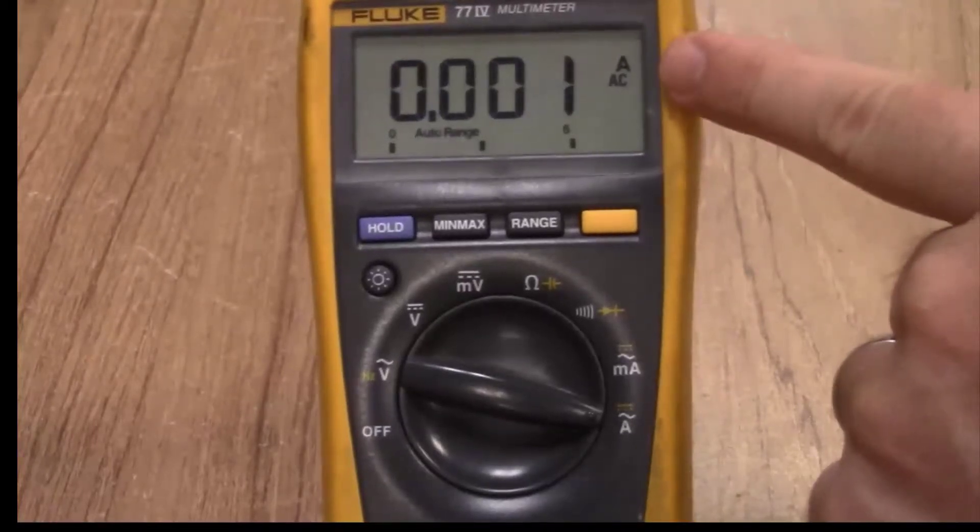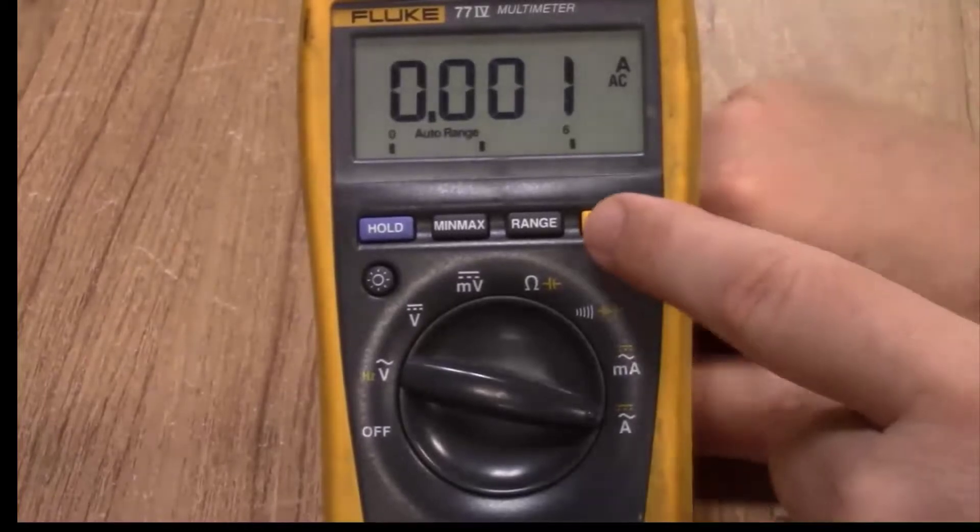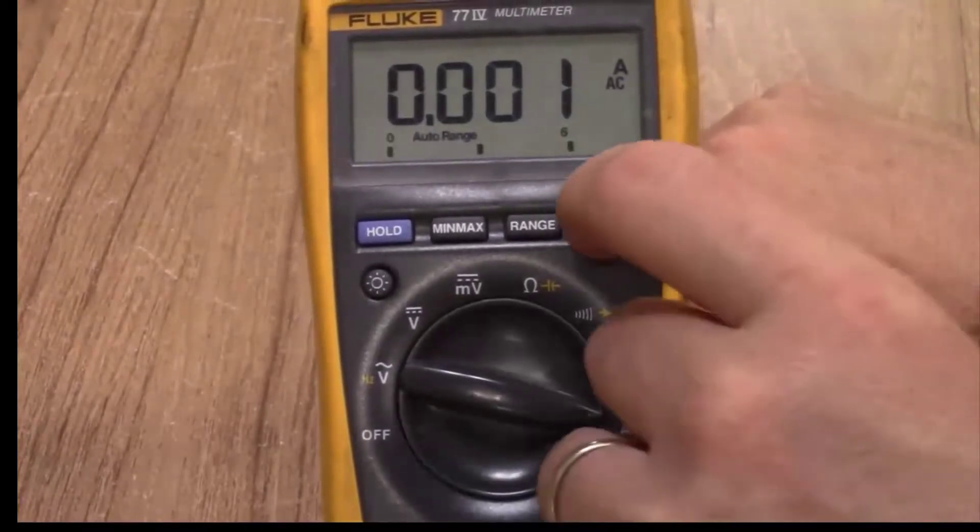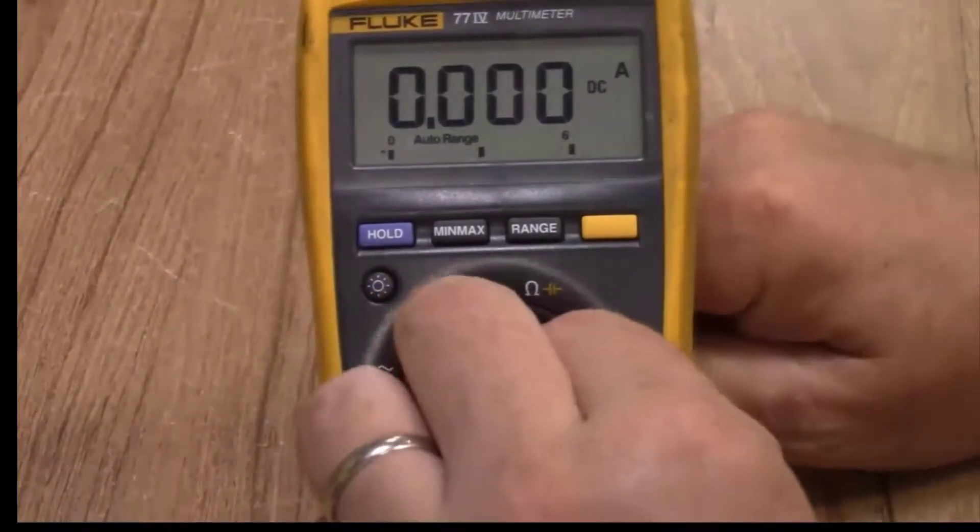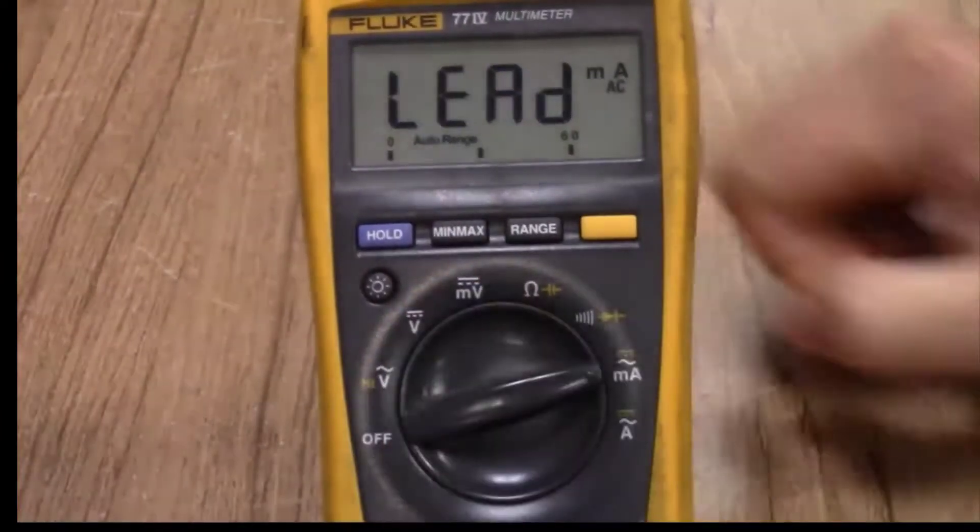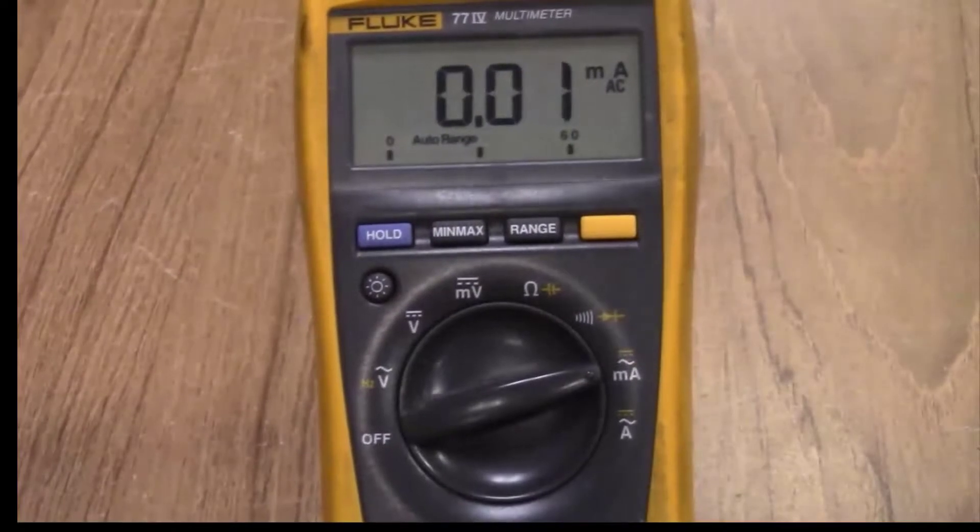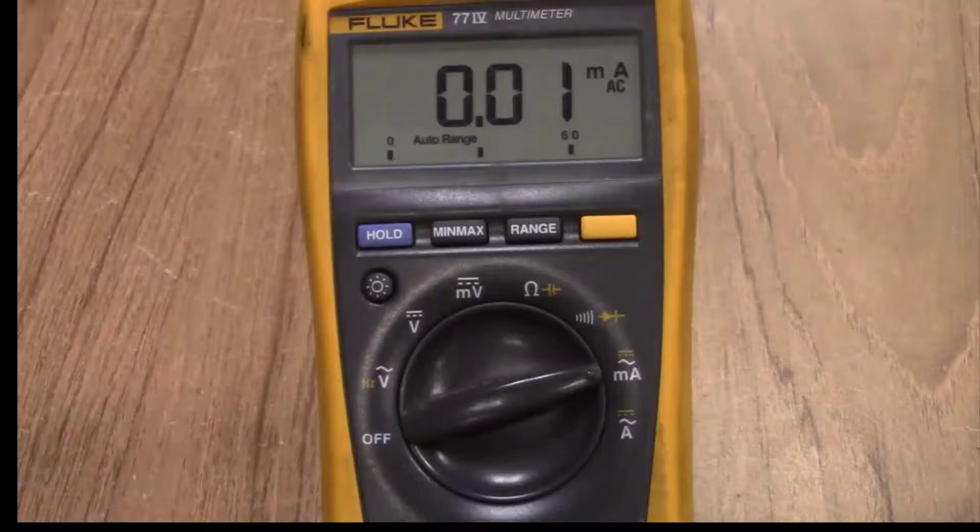It's already set on AC automatically. If you press the yellow button you can see how it goes to DC. Same way with your milliamps. If you set it to a milliamp setting you would be plugged in with your red lead on the 400 milliamp jack.